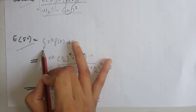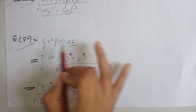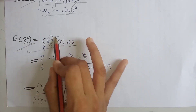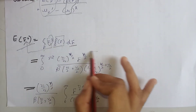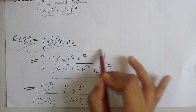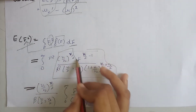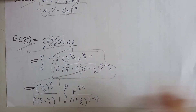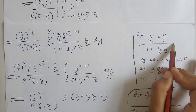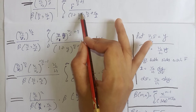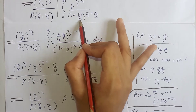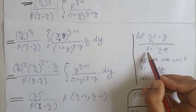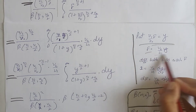To find E(F²), according to the definition of expectation we write the integral over all values of F with respect to dF. Inside we write F² multiplied by the PDF of the F-distribution. We take the constant term outside the integral since it does not contain F.